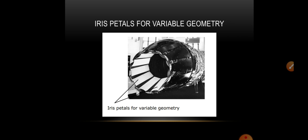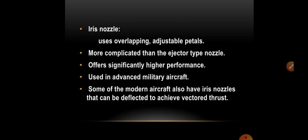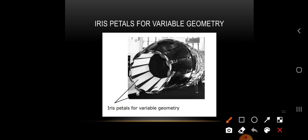Petals are used for iris variable nozzles. These petals can be actuated in whichever direction needed, making thrust vectoring simple, but the geometry is very complex. These types of nozzles are not used in ordinary aircraft. With this, we conclude the video. If you liked the video, please like, share, and subscribe.